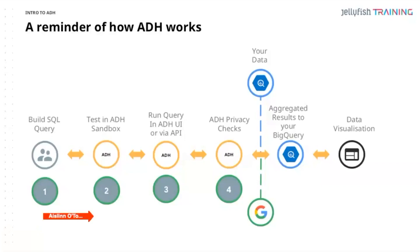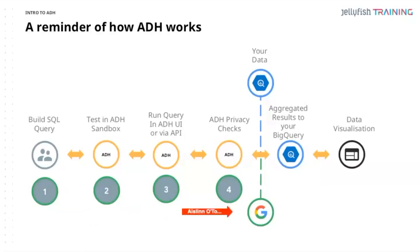The sandbox helps us understand where we might hit privacy restrictions and redactions in terms of the outputs of our query. That enables us then to run the query on our own Ads Data Hub instance via the UI or via an API. From there, Google runs privacy checks in the background before returning the results out to our BigQuery project.